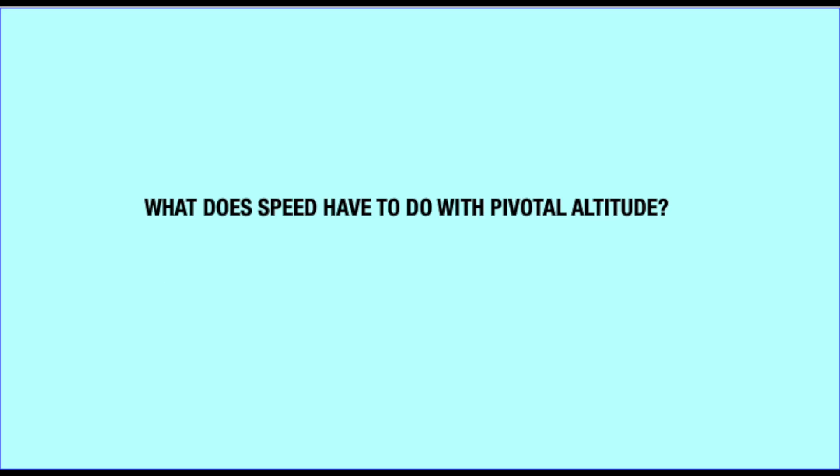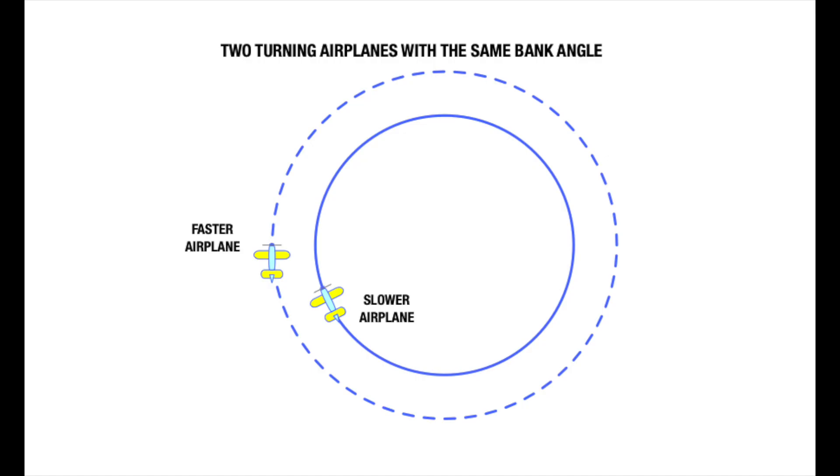Let's talk about what happens when an airplane changes its speed in the turn. I want to be clear here that when we talk about a faster and slower airplane, we're talking about the same airplane, your airplane, simply flown at a faster or slower airspeed. If we have two identical airplanes with the same bank, but one is flying faster, the faster airplane will have a greater radius of turn. Let's look at why this is the case.